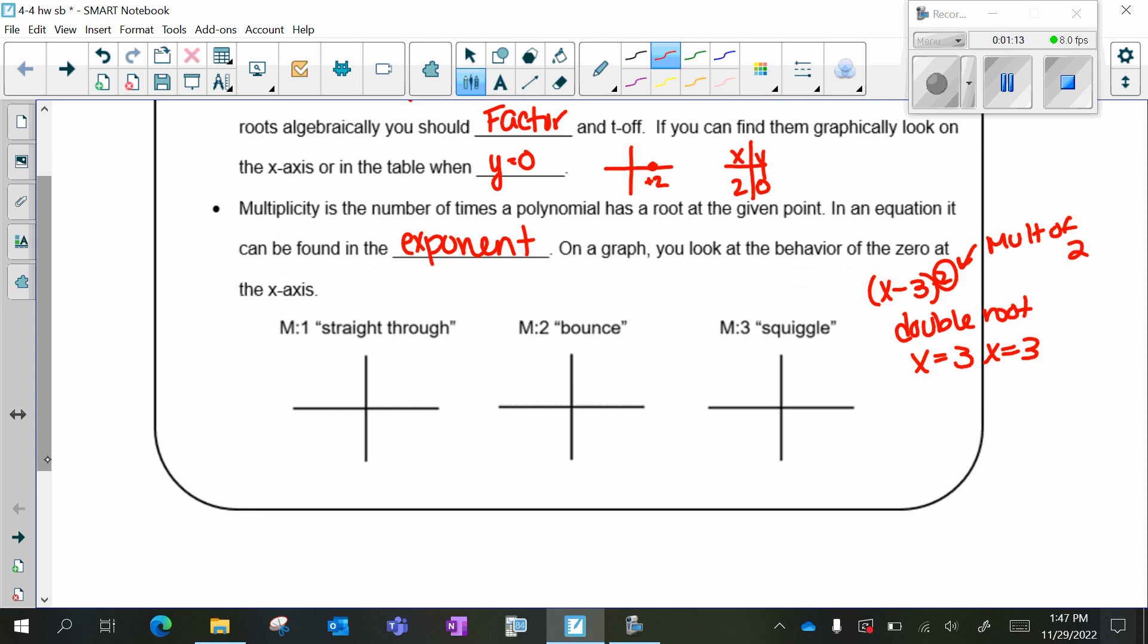Odd multiplicities and even multiplicities behave in a pattern. Odd multiplicities always go up and down. For example, a multiplicity of one goes straight through. A multiplicity of 2 would have a bounce. These are multiplicities, not the actual zeros. A multiplicity of 3 would squiggle or linger.